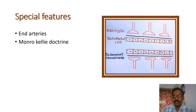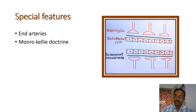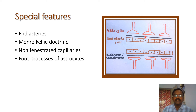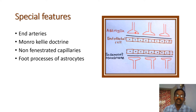The brain is present in a rigid cage-like structure. Within the cranial cavity, the brain tissue, blood flow, and extracellular fluid are all maintained at a constant level — this is called the Monroe-Kellie doctrine. The cerebral blood vessel capillaries are non-fenestrated capillaries. The cerebral blood vessels are surrounded by the foot processes of astrocytes, which help form the blood-brain barrier.